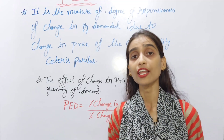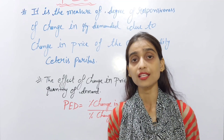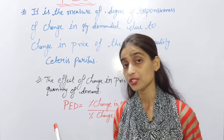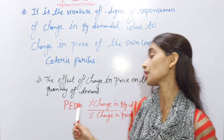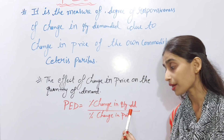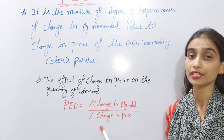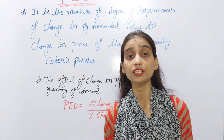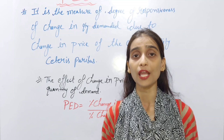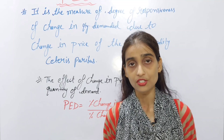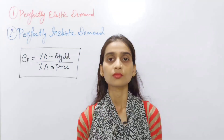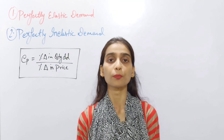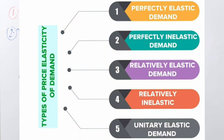In the simplest manner, the effect of change in price on the quantity demanded. The numerical value of price elasticity of demand is percentage change in quantity demanded divided by percentage change in price. As we know, there are five types of price elasticity of demand.